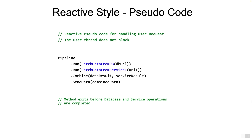That's pretty much the reactive style of programming — we are doing this so that we do not block the user thread. As you might expect, this is a fundamentally different way of programming and requires a different way of thinking. The biggest problem with Java Futures is that it's not designed to handle reactive style architectures. We cannot create a pipeline of asynchronous activity in a nice, fluent way.